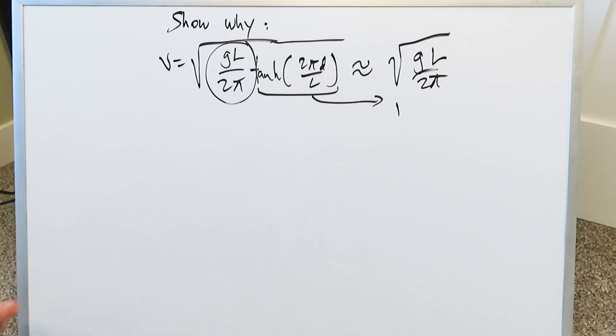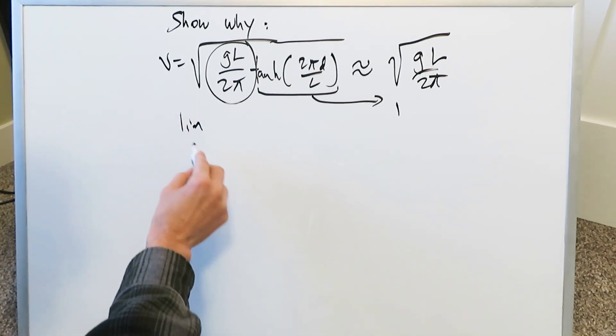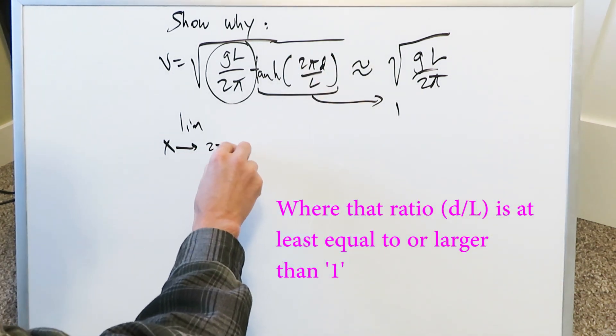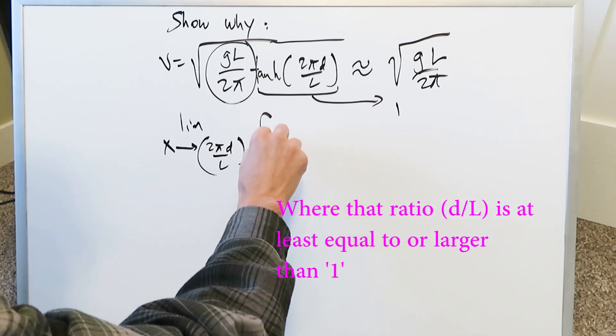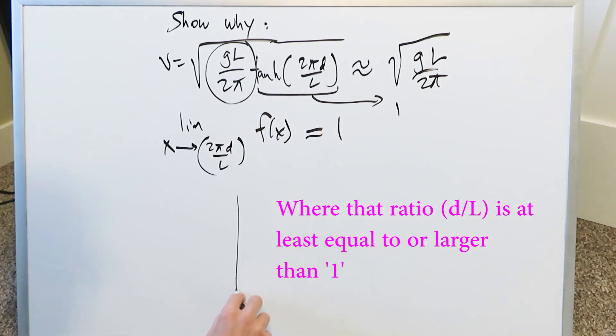In essence, this entire expression right here can be viewed as a limit. Limit as x, this is my x-axis value, is approaching a certain right over here, 2πd over L. Your function, which is your hyperbolic tangent, will almost always equal 1. Why is that the case?